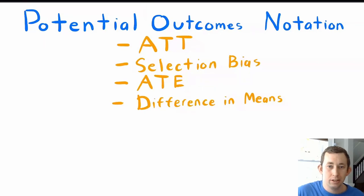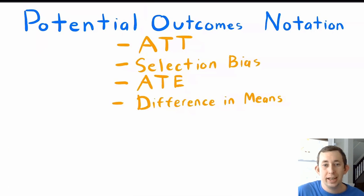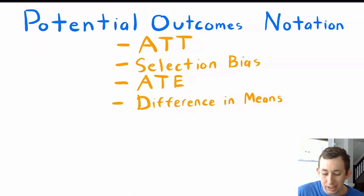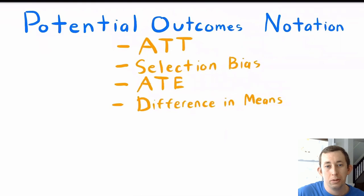Hi guys, welcome back to In Case of Econ Struggles. Today we're going to keep talking about causal inference and causal methods, and specifically potential outcomes. At the end of the last video, we talked a lot about these different breakdowns in terms of the treatment effect. This will also be a good review of the average treatment effect on the treated, selection bias, average treatment effect, and difference in means — in terms of thinking about what we're actually estimating when we try to assume a causal impact. Timestamps are below if you'd like to jump around, but let's go right into it.